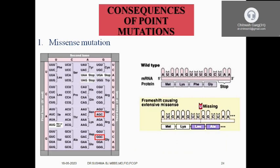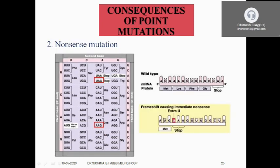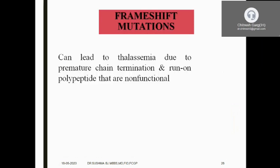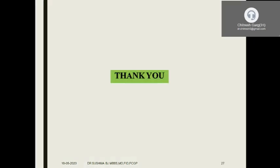The consequences of point mutation include sickle cell disease, and nonsense codons appearing in between to terminate the chain. Frameshift mutations can lead to thalassemia and, due to premature chain termination, produce run-on non-functional polypeptides. This covers the overall topic of mutations.